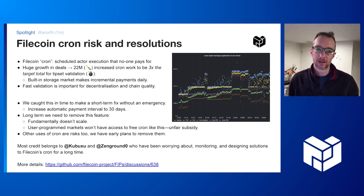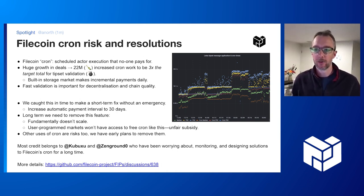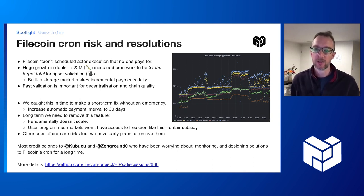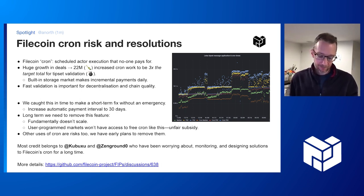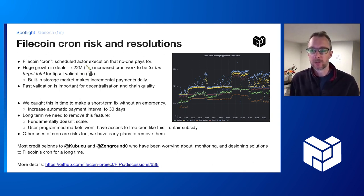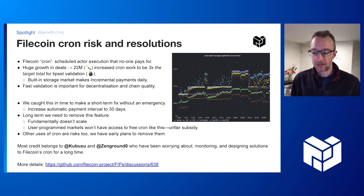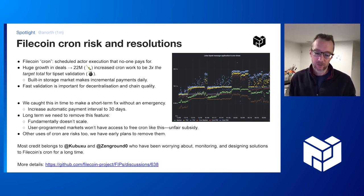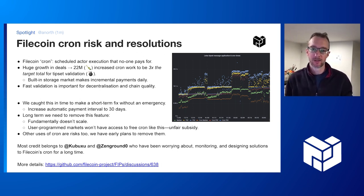This is starting to affect block validation times, which is really important for a blockchain network's decentralization — allowing lots of nodes to participate and keep up with the chain, and so block producers can produce their next block on time. We discovered that the built-in storage market is responsible for almost all of this blowout in cron execution, because it offers incremental deal payments every day — probably far too high a level of service for a built-in subsidized thing, particularly since most deals have no payments.